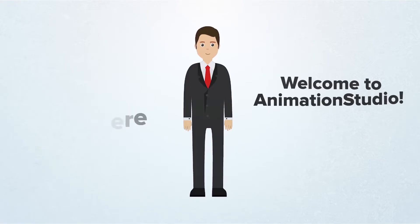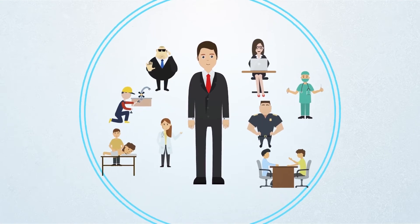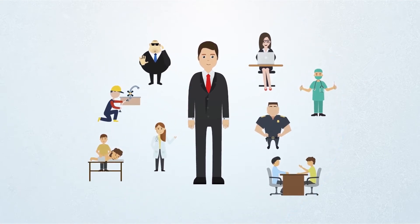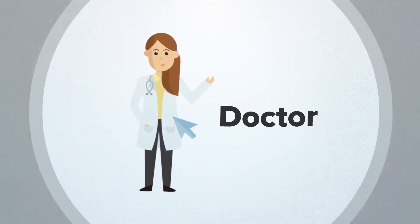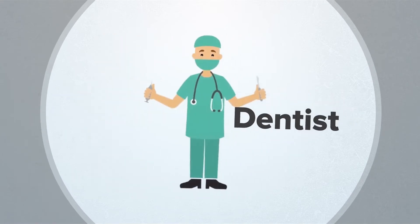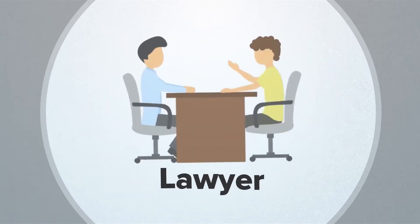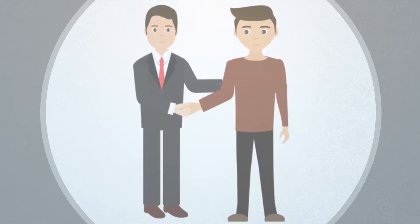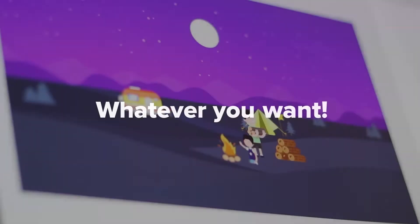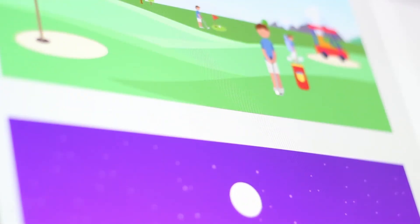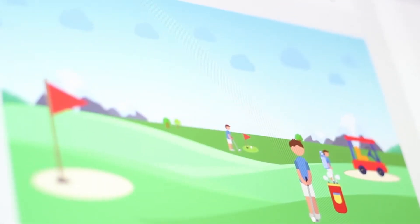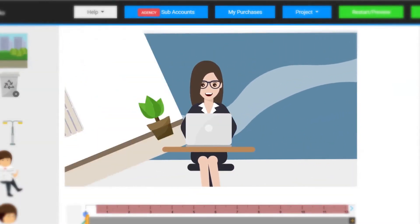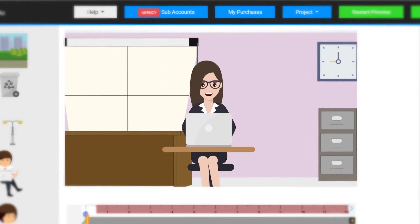Hi there, and welcome to Animation Studio. My fellow characters and I can become and do whatever you want in your animated videos. You can make your chosen character a doctor, dentist, chiropractor, lawyer, or any other profession in a wide variety of niches, businesses, and occupations. Whatever you want. You can place him or her in practically any setting that you want to, using our super cool open canvas animation technology. Whether it's a park, garage, a living room, or an office, it's entirely up to you.